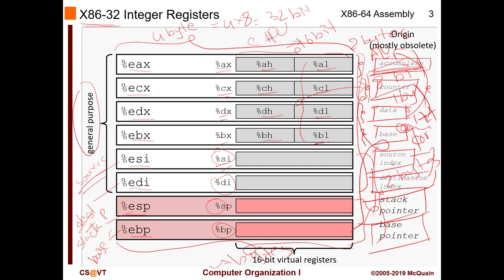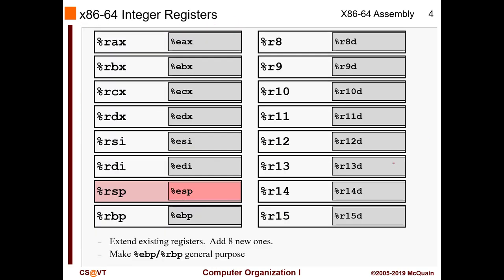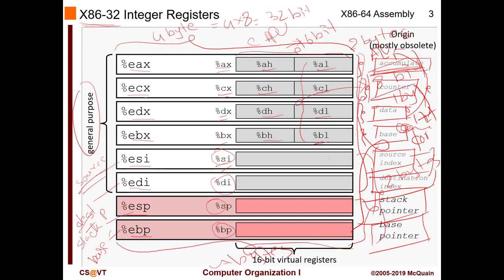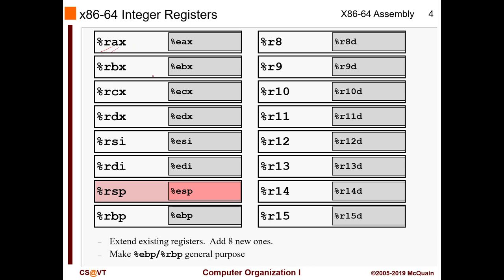Now moving to 64-bit: the 'E' prefix in EAX means 'extended' — they are extensions of AX, CX, DX, etc. In 64-bit we now have RAX, and each register is now 64-bit or 8 bytes. We have RAX, RBX, RCX, RDX, RSI, RDI, RSP, and RBP — just like before — and there is now a virtual 32-bit sub-register layer.